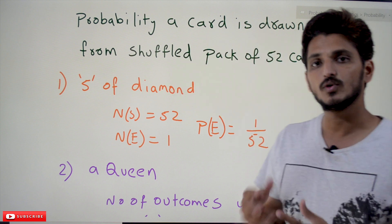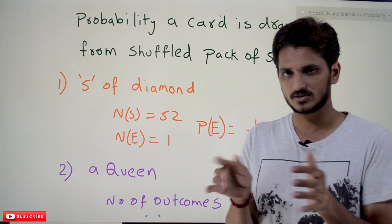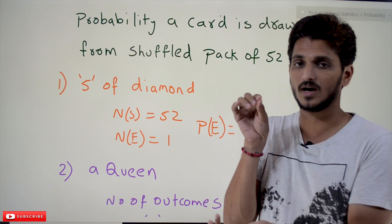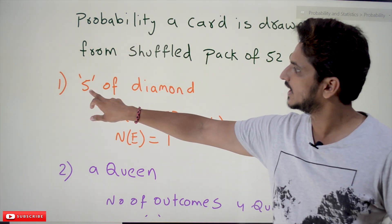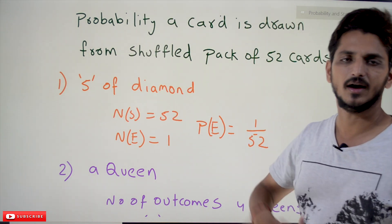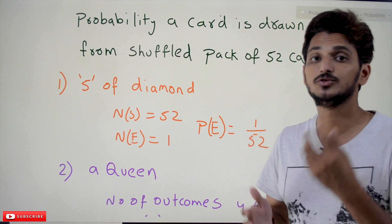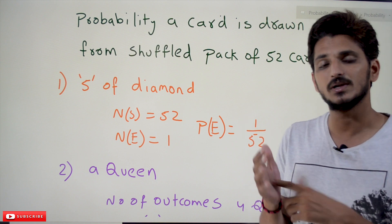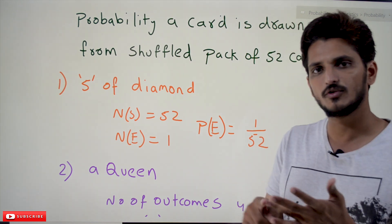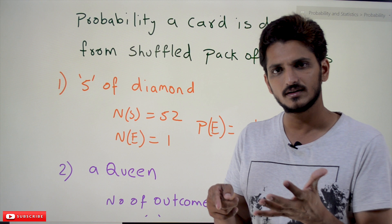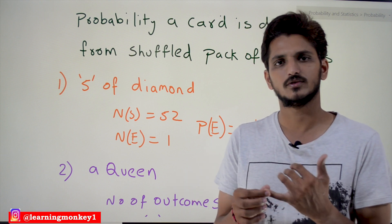We have 52 cards total. After shuffling, if you randomly pick a card from the deck, what is the probability that it is a five of diamonds? The card should have the diamond symbol and should be the number five. In the diamond suit there are 13 cards: Ace, 2, 3, 4, 5, 6, 7, 8, 9, 10, Jack, Queen, and King. So the five of diamonds is just one card.